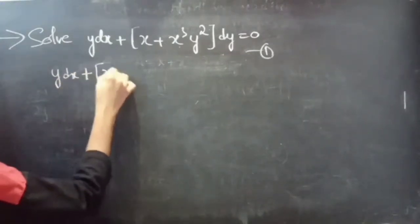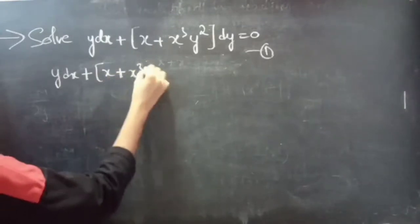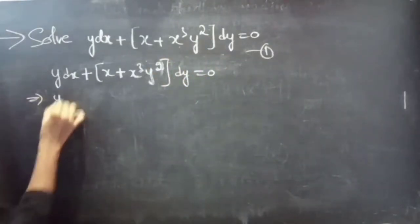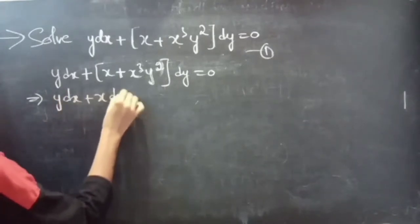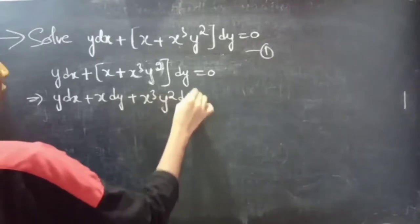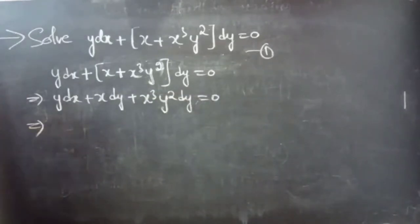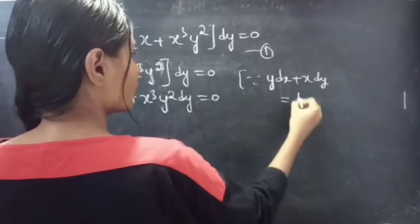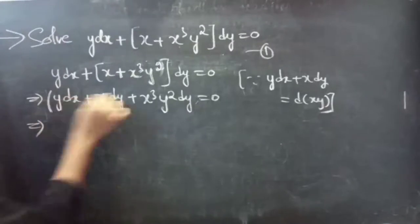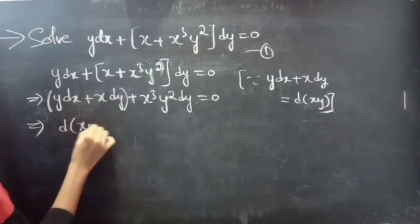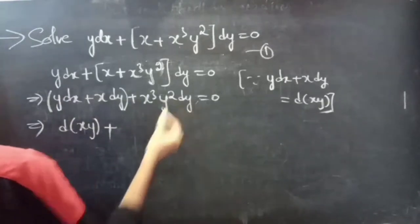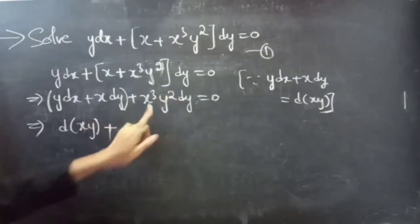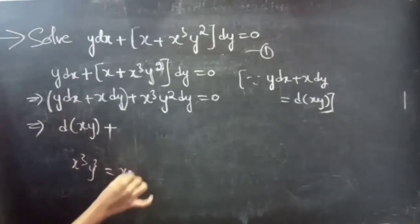We have the given differential equation: y dx plus (x plus x cubed y squared) dy equals to 0. This gives y dx plus x dy plus x cubed y squared dy equals to 0. Since we know that y dx plus x dy equals d(xy), we can replace the first two terms by d(xy). In the second term, if we get one more y, we get x cubed y cubed, which can be written as (xy) cubed.